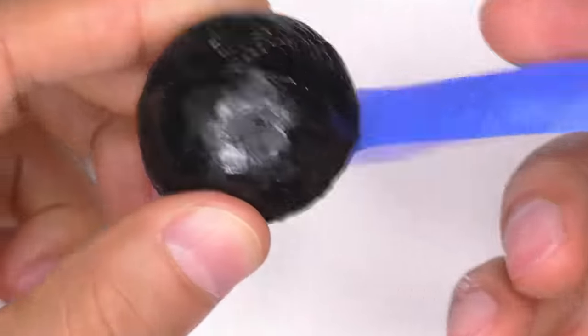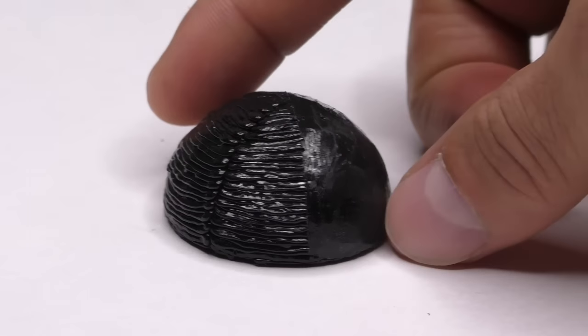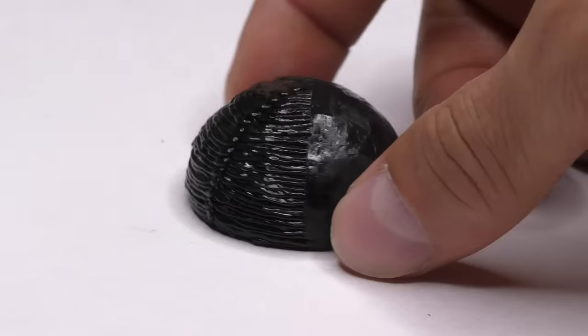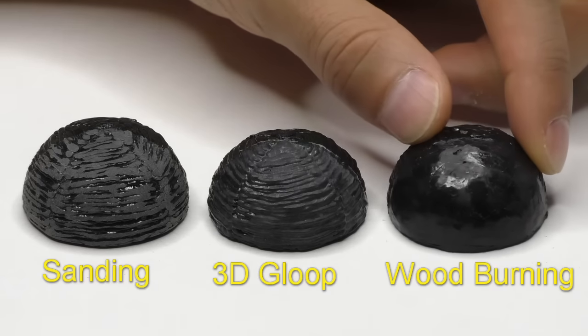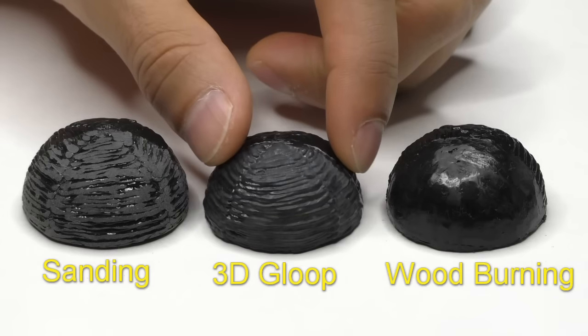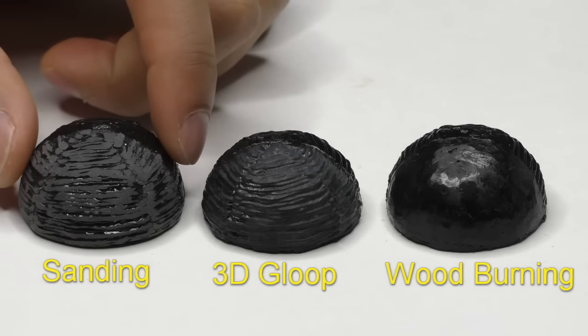And this is the finished surface using wood burning alone. It's by far the best method we've seen yet. When you put the first three methods side by side there really isn't any question at all. But can we get an even smoother surface using combinations of all three methods? Let's find out.